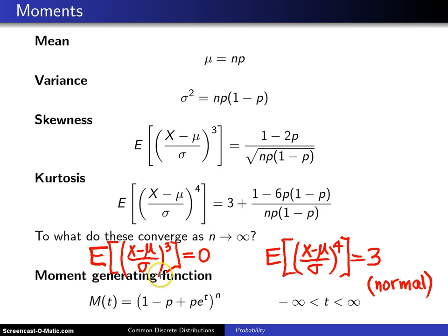The binomial distribution in the limit as n goes to infinity is approaching a normal random variable, even though one is discrete and the other is continuous. You still have that relationship between the two.